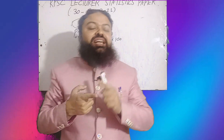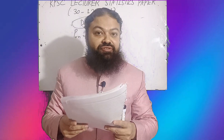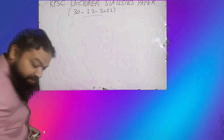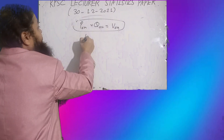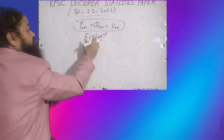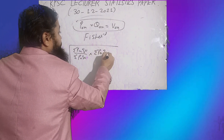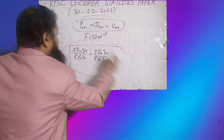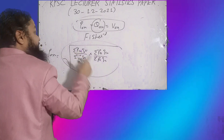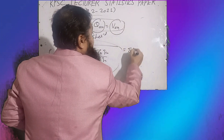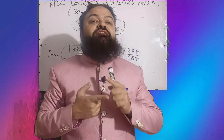The next question: what is the factor reversal test? It states that P_{0n} multiplied by Q_{0n} equals the value index number. It is satisfied by Fisher's ideal index number. The formula of Fisher's ideal index is: sqrt[(summation p_n*q_0 / summation p_0*q_0) * (summation p_n*q_n / summation p_0*q_n)]. When you find the quantity index by swapping price and quantity and multiply the two, the result is the value index number. That is why Fisher's ideal index number satisfies the factor reversal test.